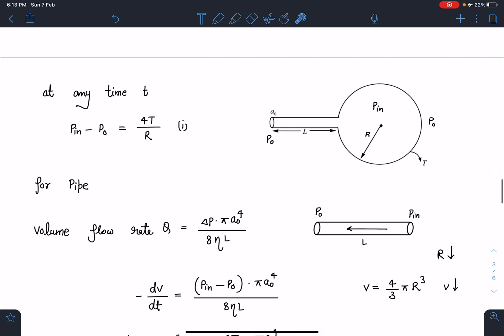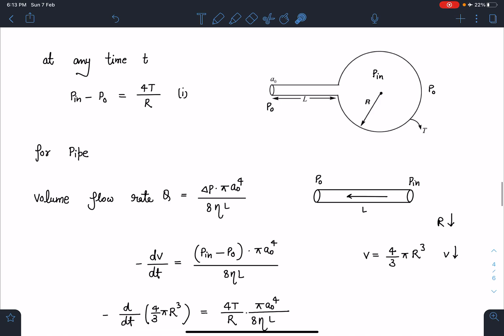Now here at any time t when the radius of the soap bubble is R, we know the pressure outside is P₀ here also and here also, and the pressure inside is Pᵢₙ.